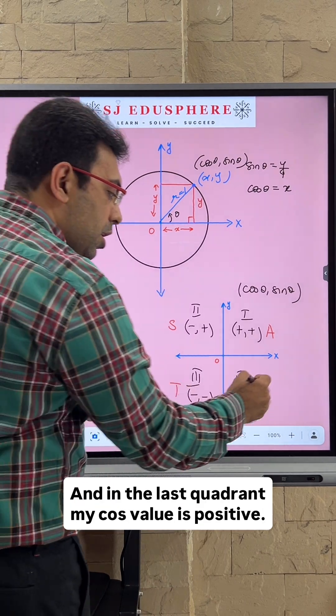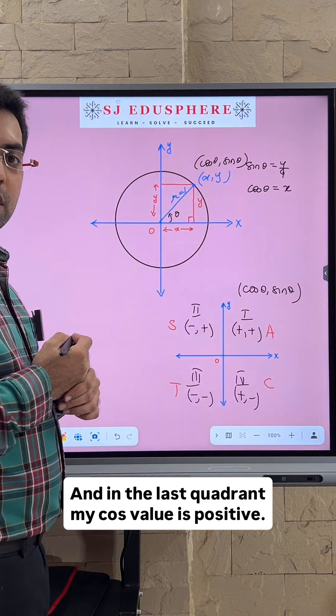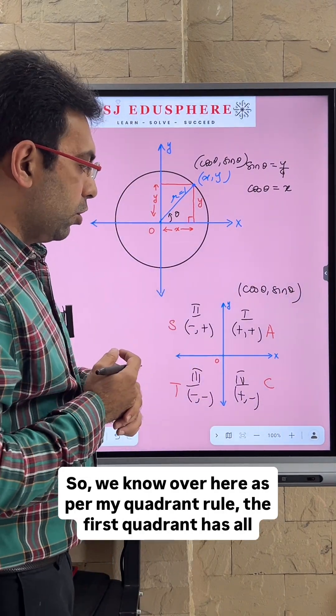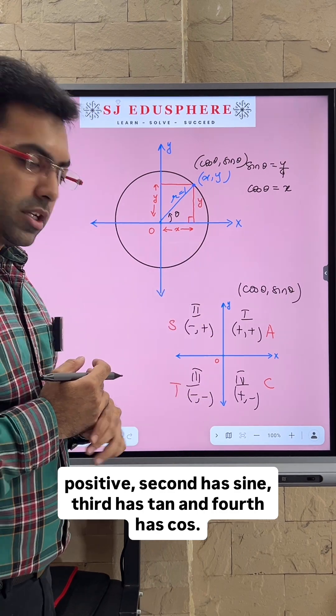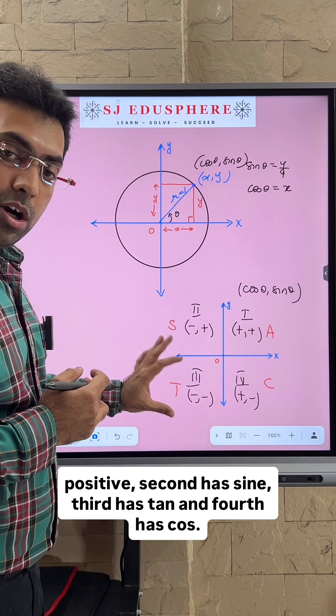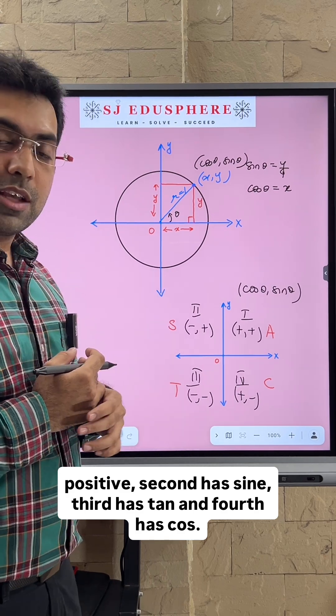And in the last quadrant, my cosine value is positive. So as per the quadrant rule, the first quadrant has all positive, second has sine, third has tangent, and fourth has cosine.